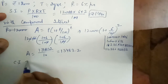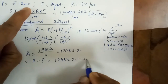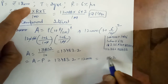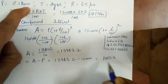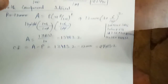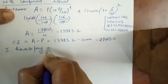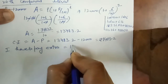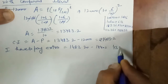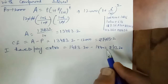Now we find compound interest: CI = Amount − Principal = 13,483.2 − 12,000 = ₹1,483.2. They ask what extra amount would I have to pay. Extra amount = CI − SI = 1,483.20 − 1,440 = ₹43.20 extra to pay if compound interest is applied. This is the answer.